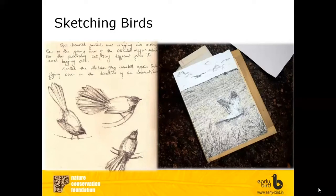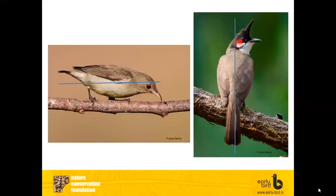I hope you have your pencil and paper ready again. Now, when you look at a bird, the range of positions that a bird can assume is limitless. A bird can completely change its appearance by stretching a long neck to its full extent or folding it back close to the body. A flying bird looks entirely different from a sitting bird. Posture is the very first thing that you will capture on paper when you sketch a bird.